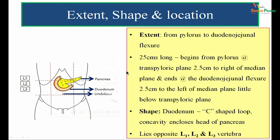Moving on to extent, shape, and location: the duodenum extends from the pylorus of the stomach to the duodenal-jejunal flexure, totally measuring 25 centimeters. It begins at the pylorus at the transpyloric plane, 2.5 centimeters to the right of the midline, and ends at the duodenal-jejunal flexure, 2.5 centimeters to the left of the median plane, a little below the transpyloric plane. The duodenum is a C-shaped loop with a concavity enclosing the head of the pancreas, lying opposite the levels of L1, L2, and L3 vertebrae.